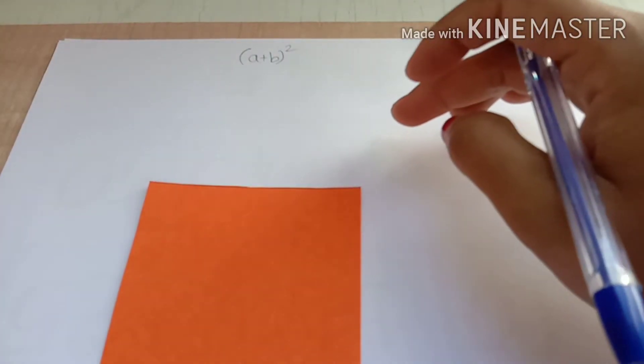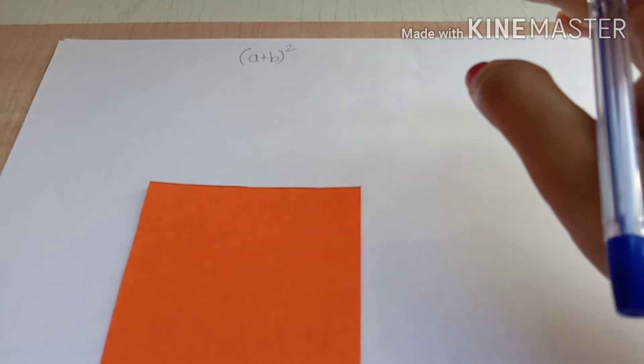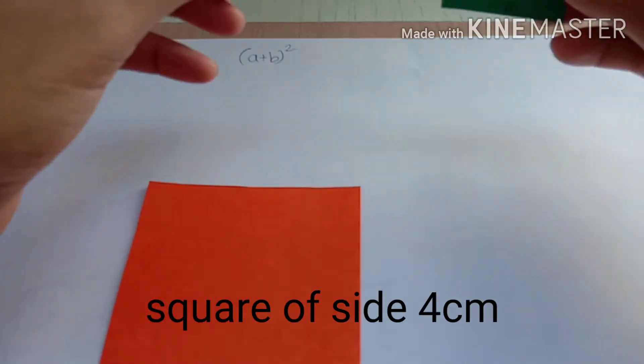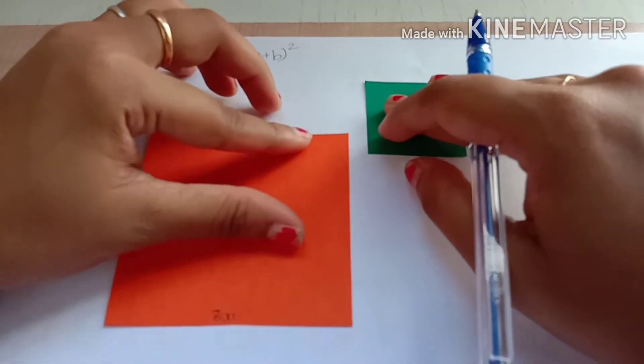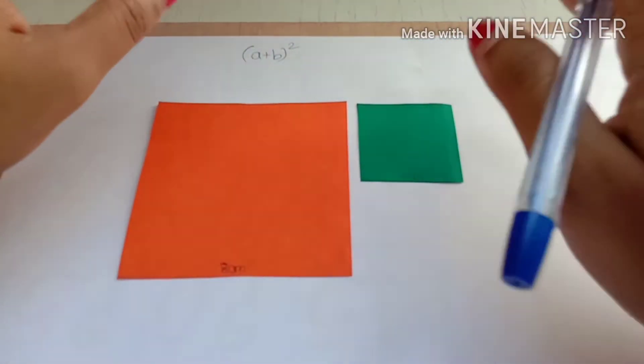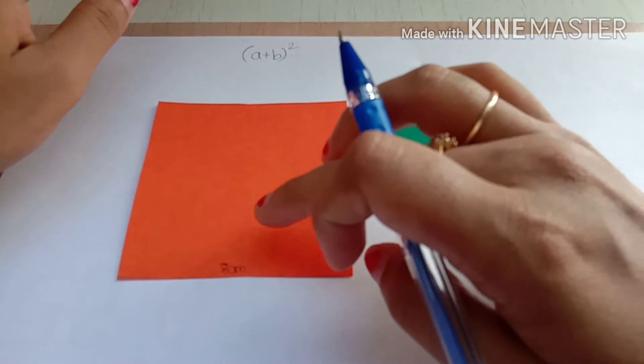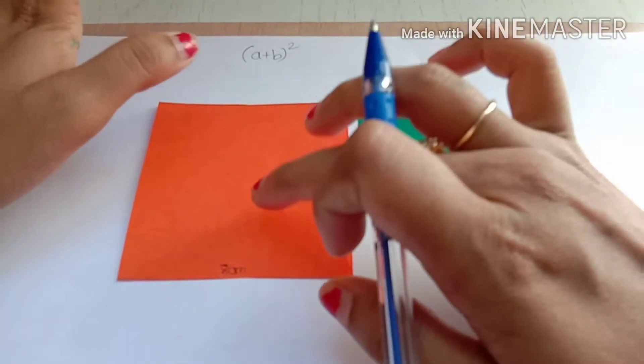Now I need another square for the value of b. I took b here as 4 centimeters. So for that I need b as 4 centimeters. Now I took a value as 8, one square of 8 centimeters.